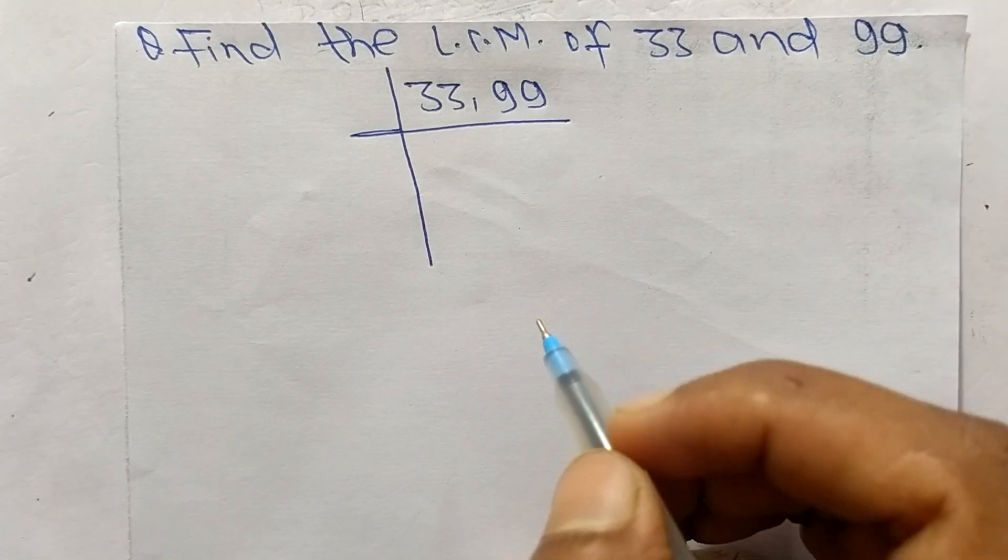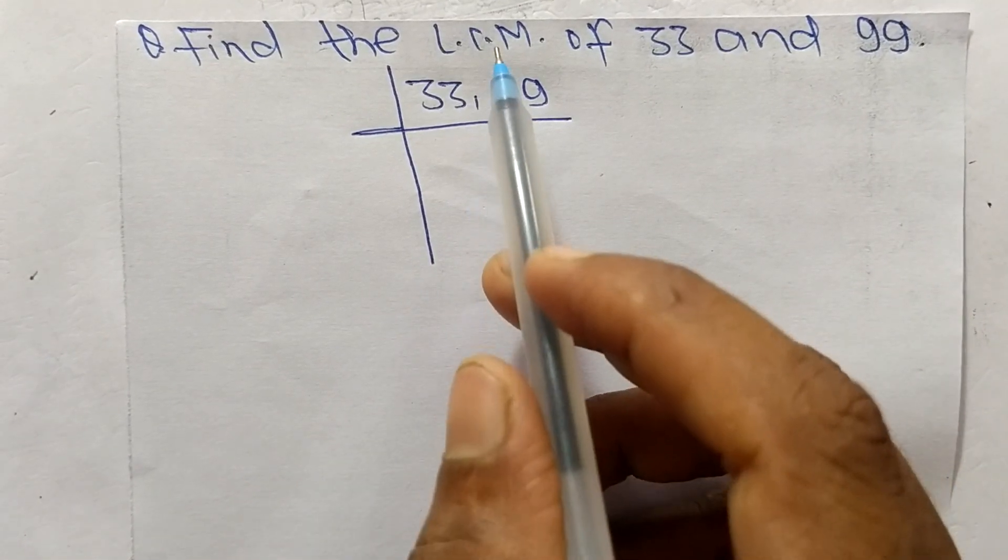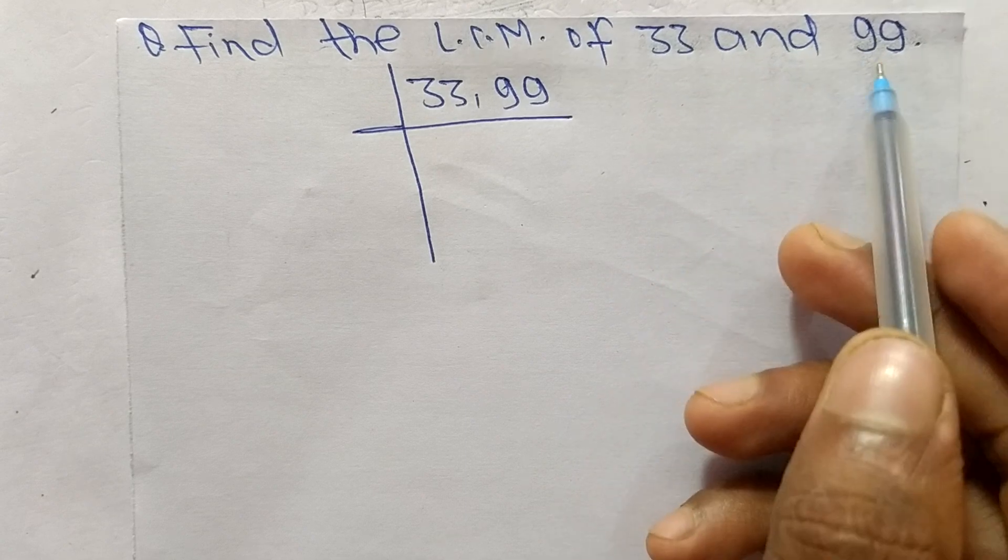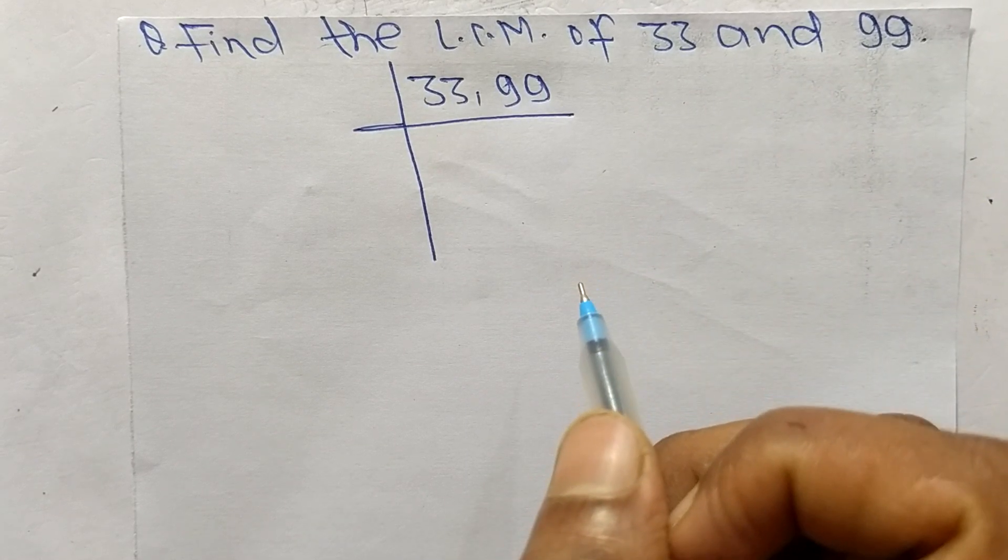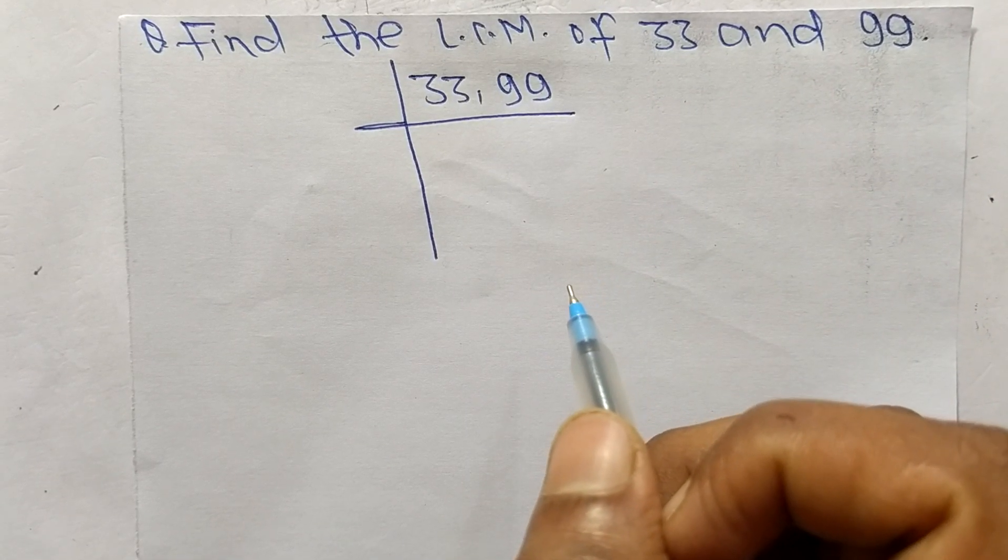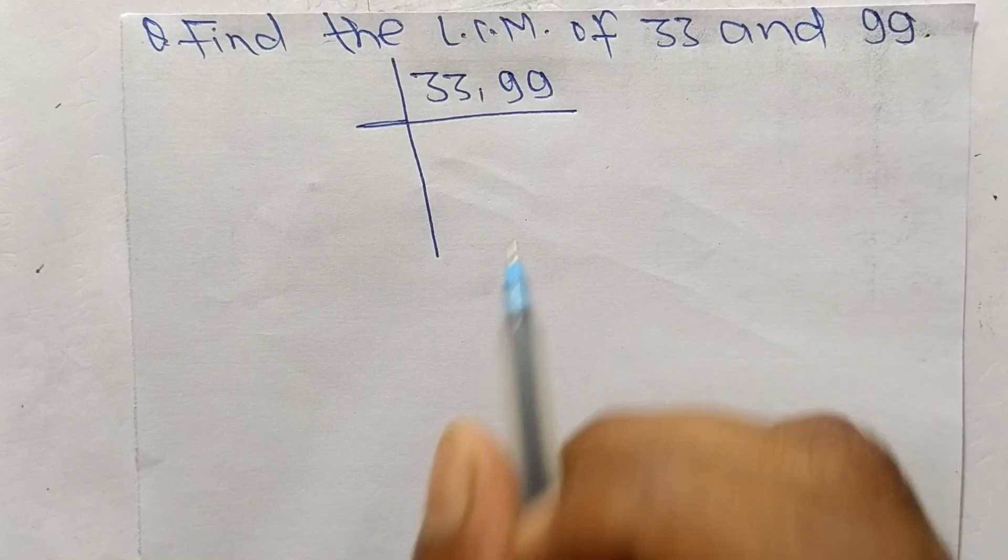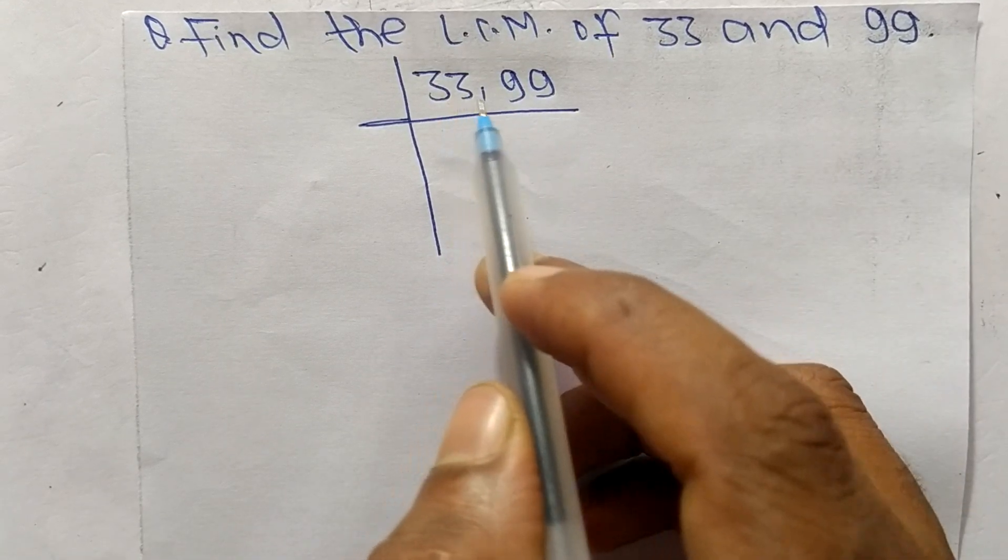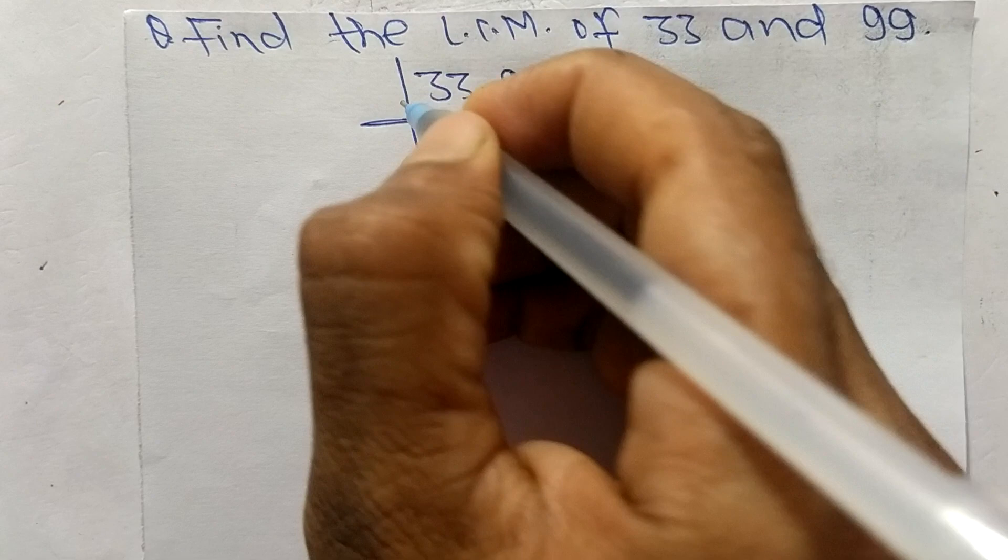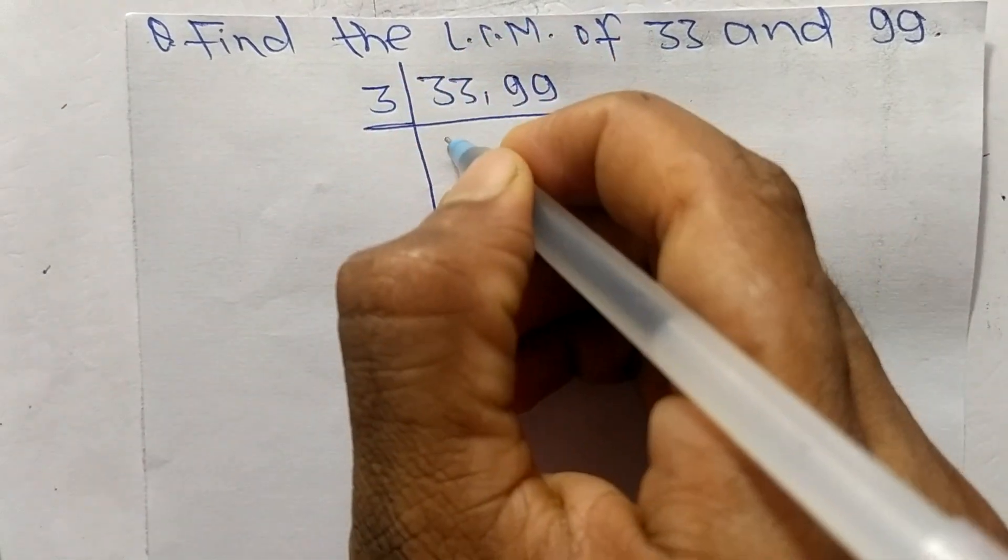Today in this video we shall learn to find the LCM of 33 and 99. To find LCM, first of all we choose the lowest number that can exactly divide 33 and 99, so the number is 3.